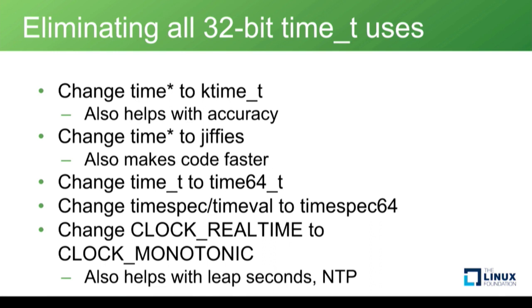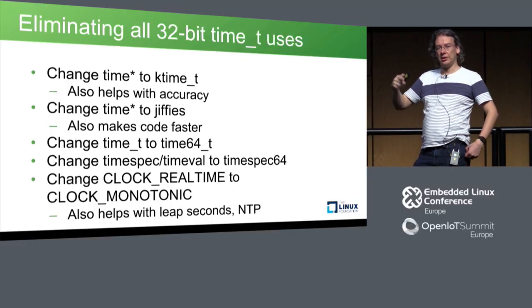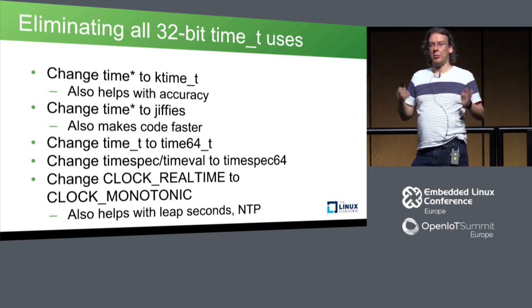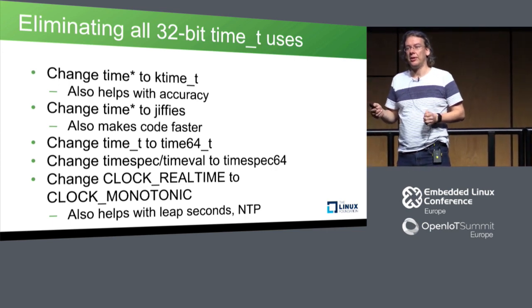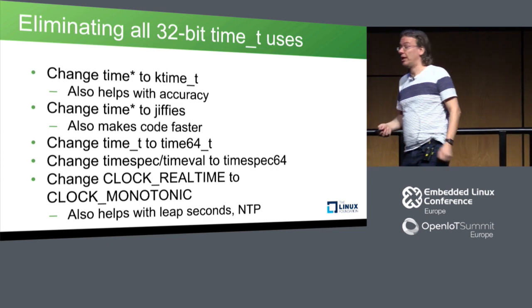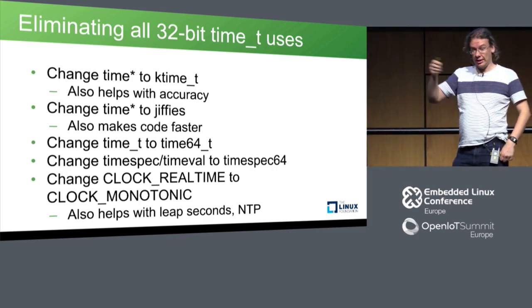CLOCK_REALTIME counts in the UTC time domain starting at 1970. It does not handle leap seconds well and is the time that user space sets when talking to an NTP server or updating via settimeofday or real-time clock interfaces. Inside the kernel you often want to know how much time has elapsed between two events, and CLOCK_REALTIME is a bad choice for that — it can go backwards during leap seconds or when time is set. CLOCK_MONOTONIC doesn't have this problem; it just starts ticking when you boot the system.